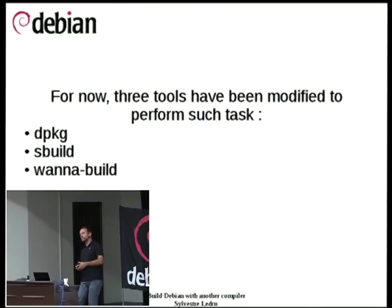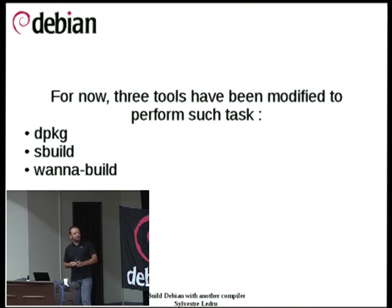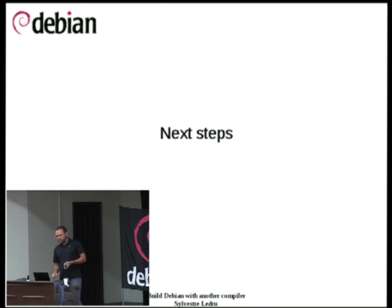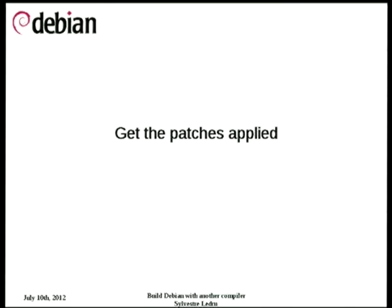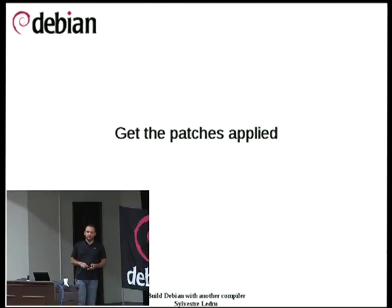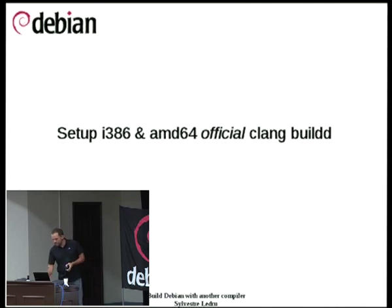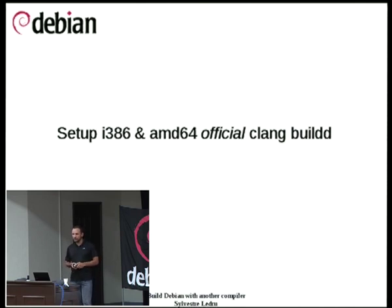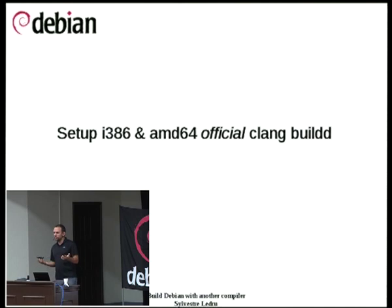What we did is that Alexander wrote patches for DPKG, sbuild, and wanna-build to decorrelate those tools from GCC and use CC and C++ instead. The midterm is right now, so we still have a month with the students to improve things. What we are planning to do next is first to get the patches applied — the maintainers will ask for improvements and tests, which is normal. We are currently creating Clang build services, working mainly on x86 for now; ARM will come pretty quickly, as it is what Clang really supports.